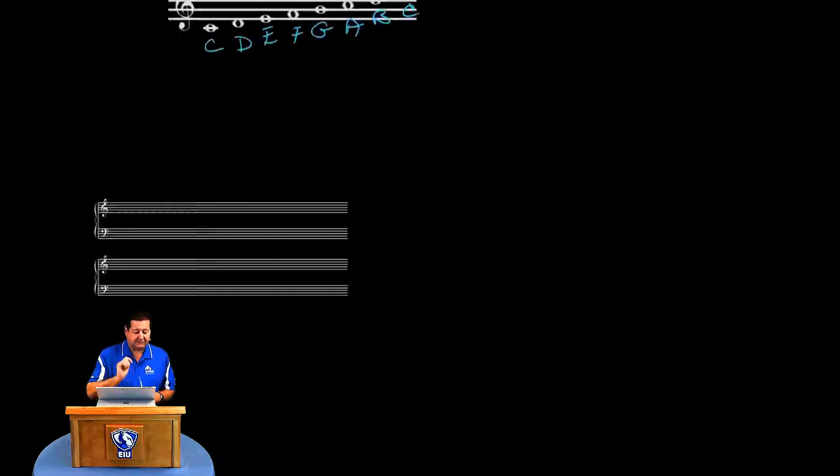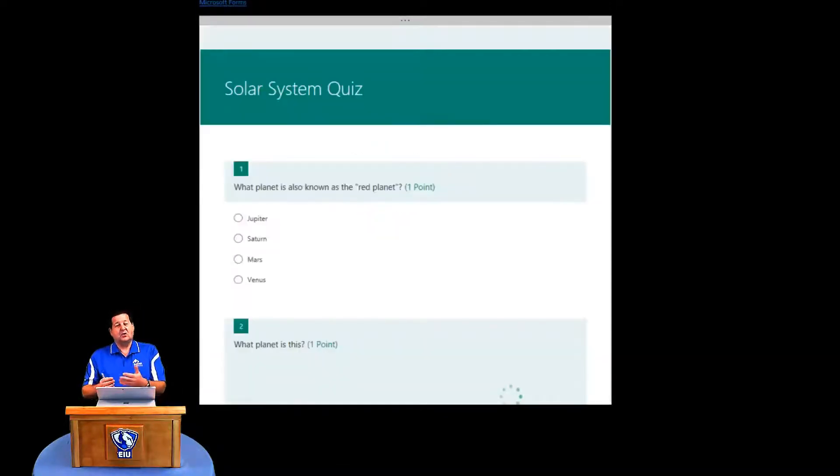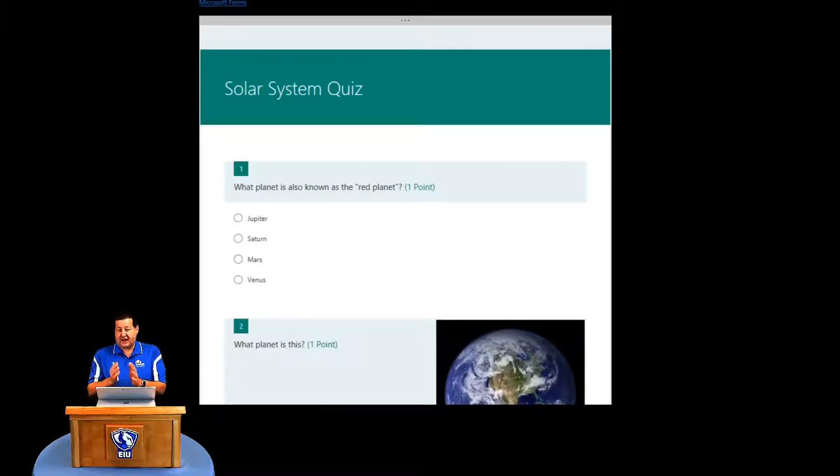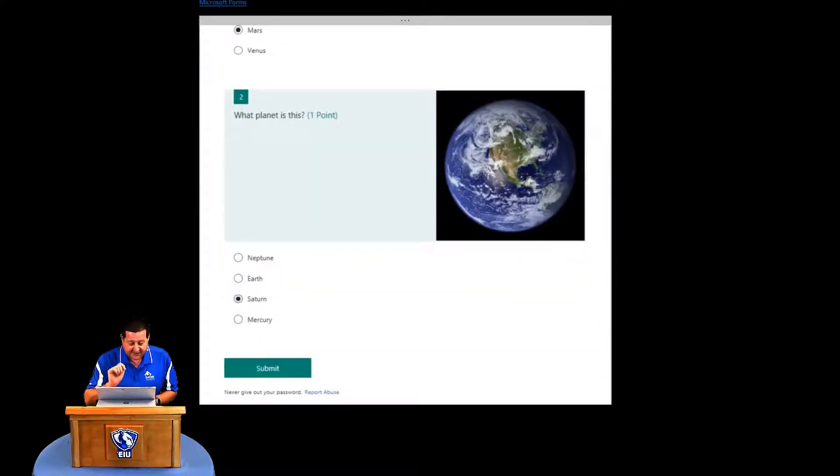The last piece, the Microsoft forms. Here is an embedded Microsoft form. One of the things that we always want to do as teachers is kind of gauge where our students are at, doing an assessment. So here's a very simple solar system quiz. Let me just go out here and answer the question. What's the red planet? That would be Mars. What planet is that? And let me select Earth. Let's get it correct here.